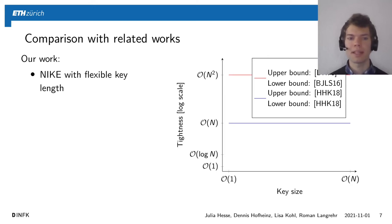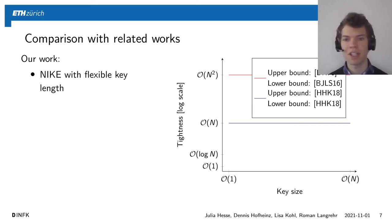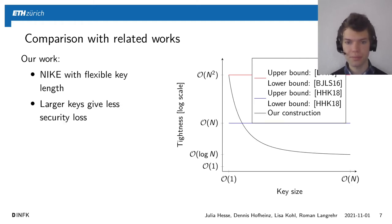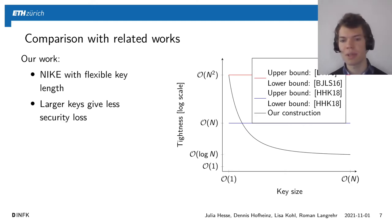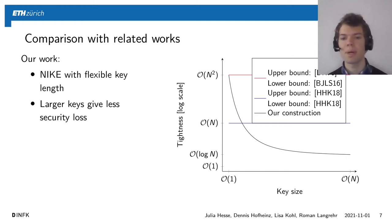In our work we look at the case where you allow the keys to get larger and grow, for example, with the number of users. Both previous works cannot get any advantage from such large keys — their tightness does not change no matter how large you choose your key. But our first construction is a NIKE where larger keys give you less security loss. More concretely, if you allow your keys to grow with the number of users, you get tightness as low as O(log N). But when you want constant-size keys, your security loss will be O(N²).